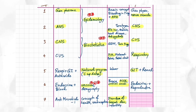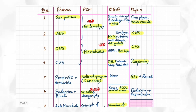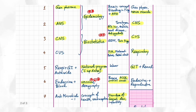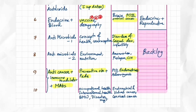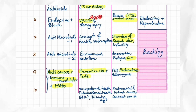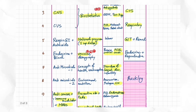For PSM: national programs with updates on Day 6, vaccines on Day 7, concepts of health and contraception on Day 8, environment and nutrition on Day 9, and on Day 10 miscellaneous topics like international health, biomedical waste management, disaster management, and occupational health. In OBG, Day 1 covers basic concepts and bleeding in pregnancy along with APH, and Day 2 covers teratogens, Rh isoimmunization, anemia, heart disease, and anticoagulants in pregnancy.